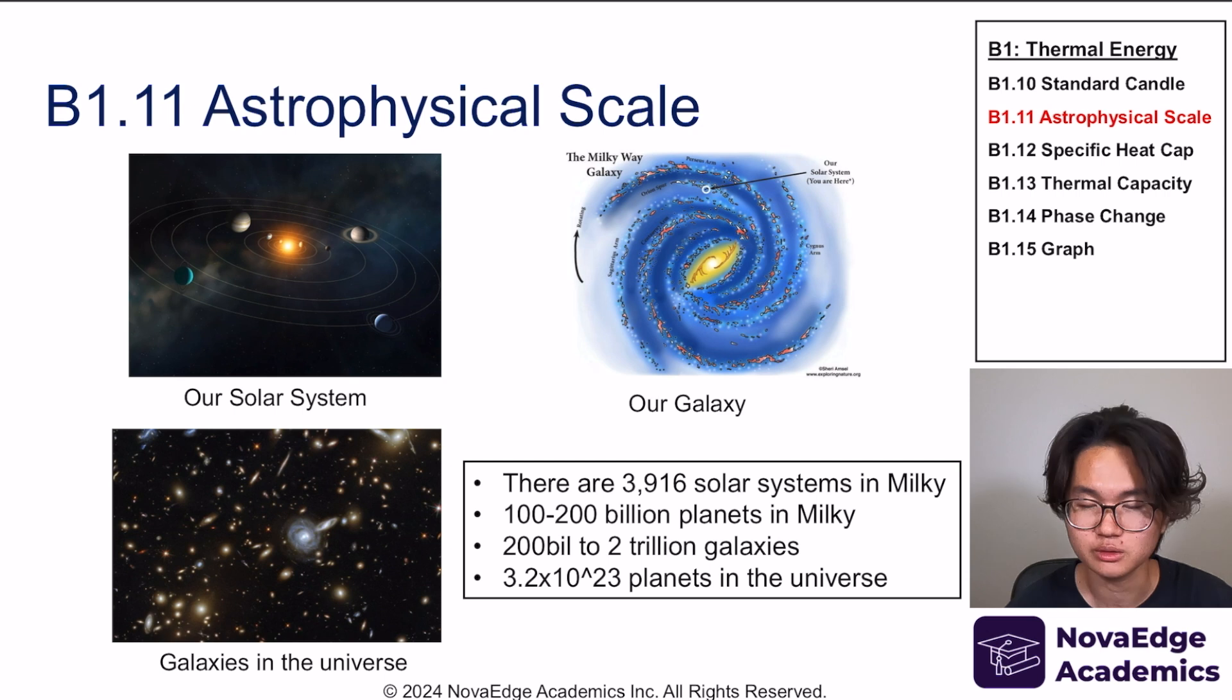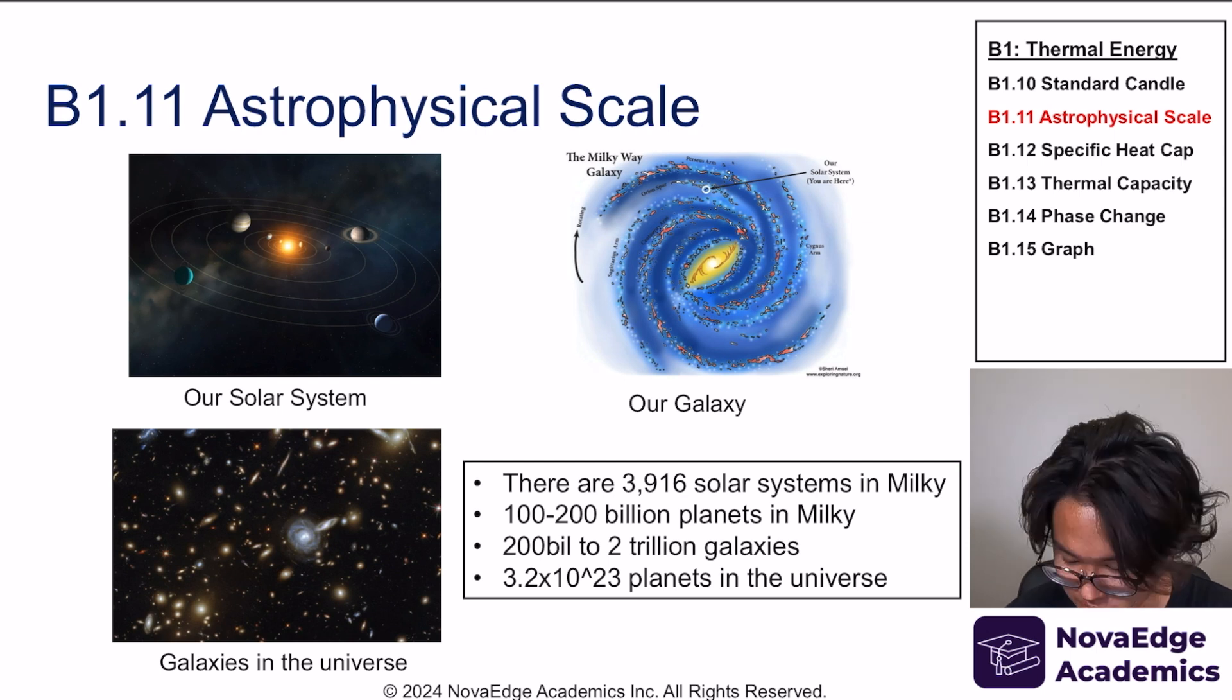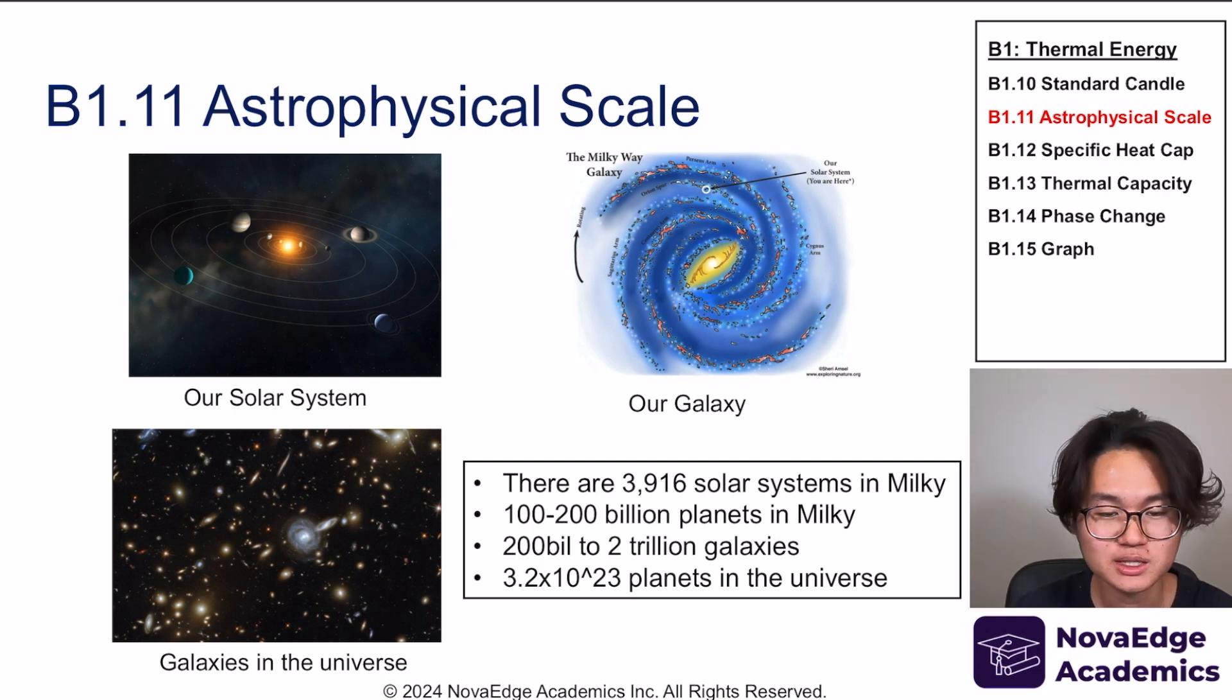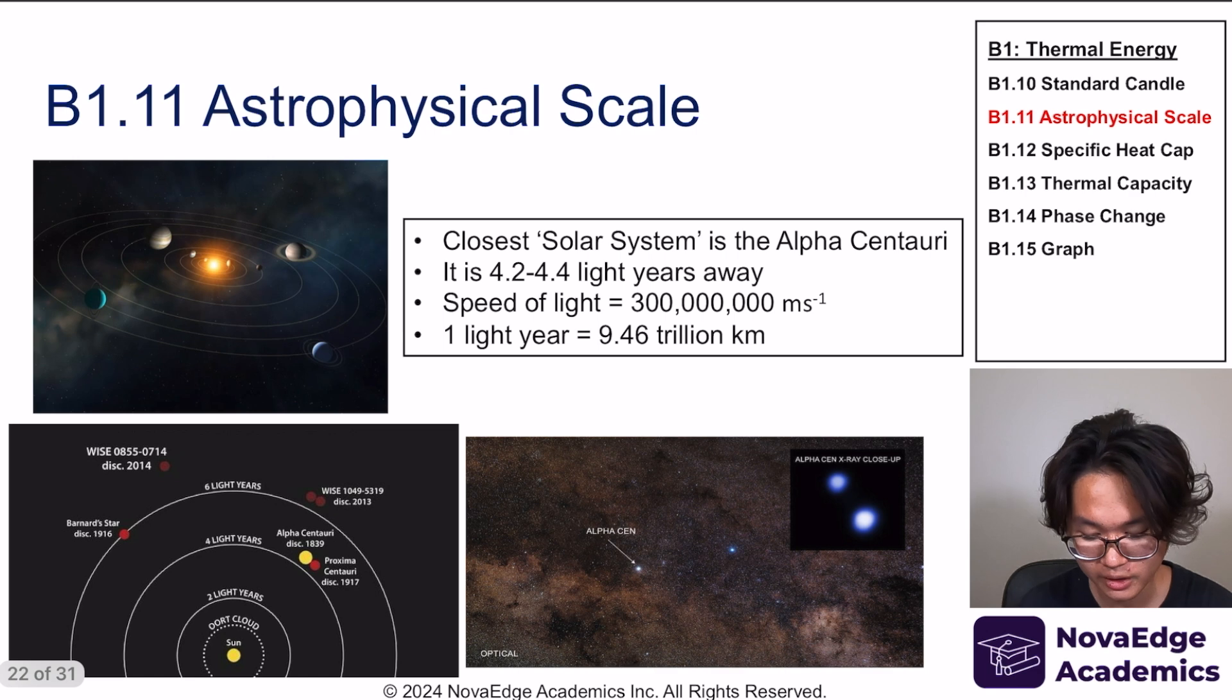And then there's 200 billion to 2 trillion galaxies in our universe. This whole thing—there's 200 billion to 2 trillion of them, which comes down to about 3.2 times 10 to the power of 23 planets in the universe. This is just crazy scale, which is probably the reason why I believe personally that there might be extraterrestrial beings out there somewhere where we can't even see, we'll never find out, because it's just so far away.